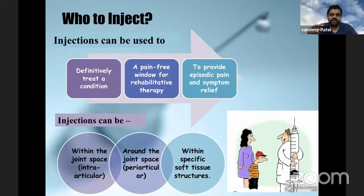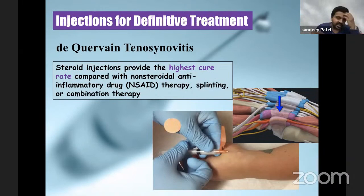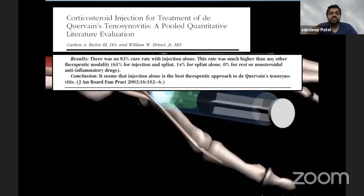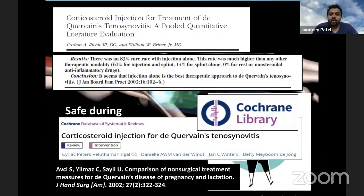Injections can be broadly intra-articular, that is within the joint, peri-articular, around the joint, and within specific soft tissue structures. For definitive treatment, the role of steroid is - one is DeQuervain's tenosynovitis. It is to be noted that it provides the highest cure rate compared to other NSAID therapies, splinting, or any other combination therapy. Most patients are symptom-free after just a single injection. A very good systematic review found an 83% cure rate with injection alone, higher than any other therapeutic modality. DeQuervain's tenosynovitis is often a problem of pregnancy and postpartum breastfeeding, and it's safe even in these conditions. The Cochrane database also lists steroid as a definitive indication.